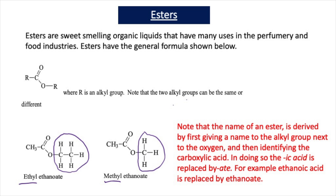If we look at our second ester, we have a CH3 attached to the oxygen in the ester. A CH3 group is a methyl group, so the first part of the name of this ester starts with methyl. To get the second part of the name, I look at the remaining part of the molecule and decide which carboxylic acid it resembles. It resembles ethanoic acid again. Therefore, this ester is called methyl ethanoate.